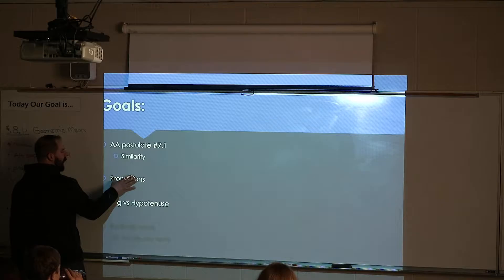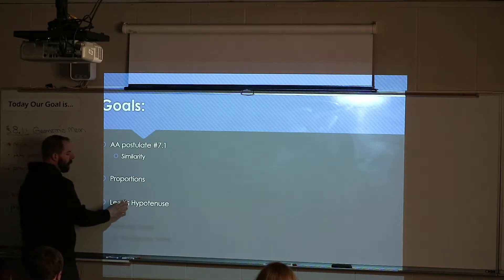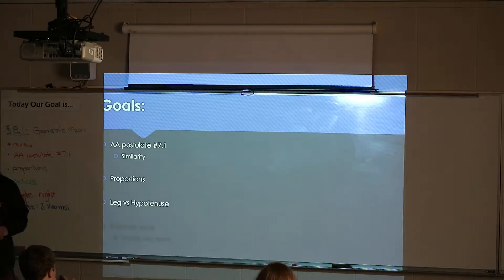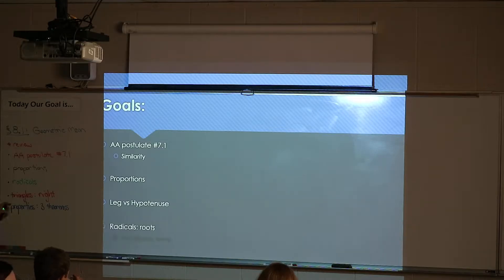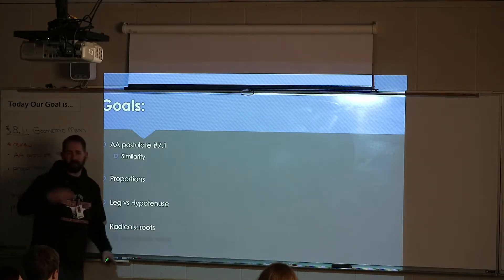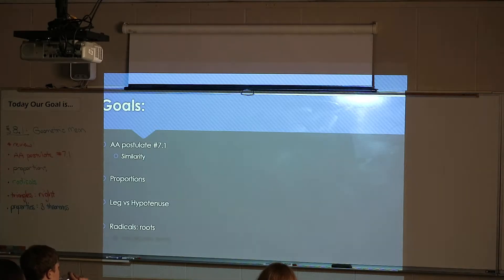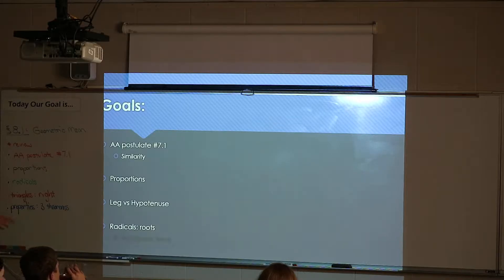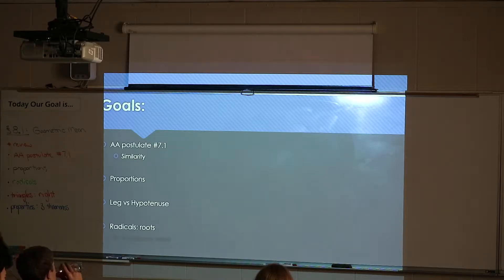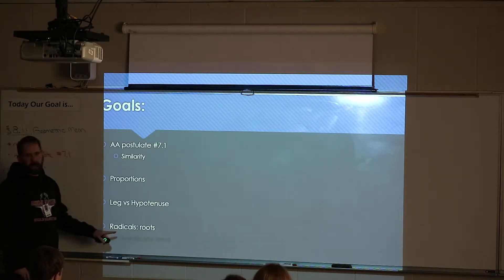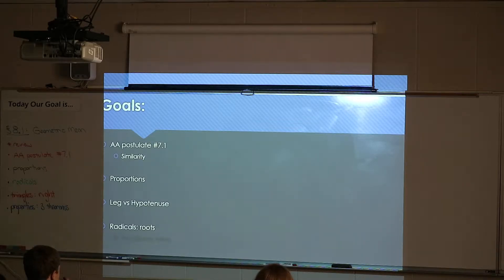The next vocabulary we're going to talk about is how to apply that to a right triangle where we have two vocab terms: legs and hypotenuses. And then the last thing we're going to talk about today is radicals and how to use them. Any questions with the rough outline of what we're talking about today?